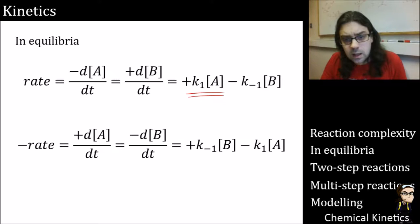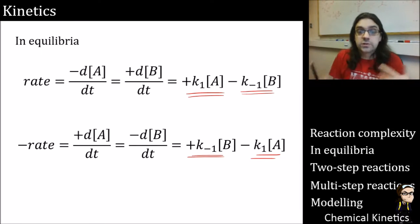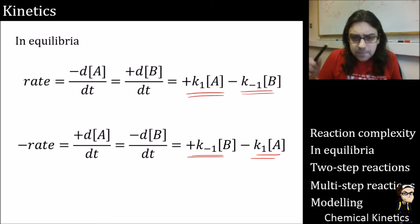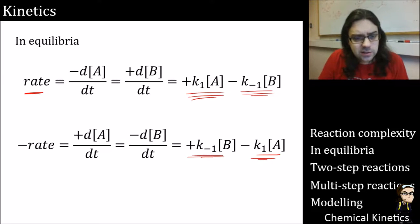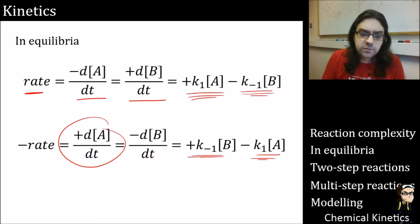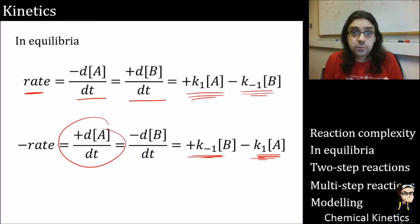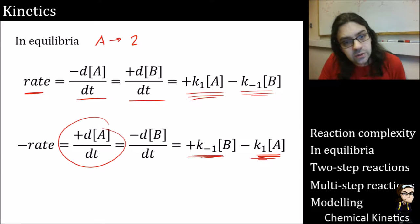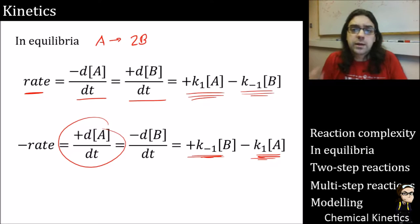We add those two contributions together to get the overall rate of change of B. The two equations for dA/dt and dB/dt are essentially the same with reversed signs. Don't get bogged down if you see negatives or positives reversed — it all depends on how you define your rate in the first place. If you have A going to 2B, you might find factors of 2 appearing. They're all equally valid — just be careful about how you define things.